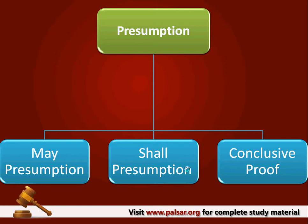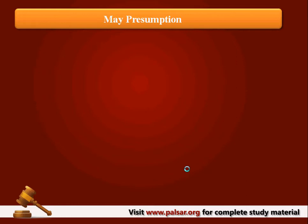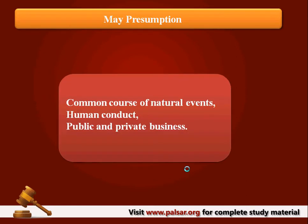Now let us turn to illustrations and examples under each category, beginning with May Presumption. The common standard given to arrive at a conclusion is: the court, basing upon human conduct, common course of natural events, and public and private business, draws a conclusion — and it is not a mandatory conclusion, it is only a discretionary conclusion. The court has a choice either to believe that proof of one fact means the other fact is also proved, or to require that the other fact needs to be proved. Under this criteria, we have a variety of examples given under Section 114 of the Indian Evidence Act.